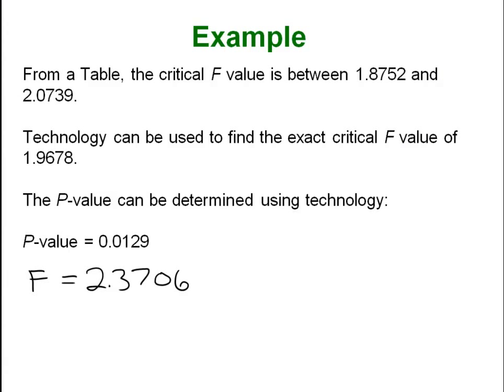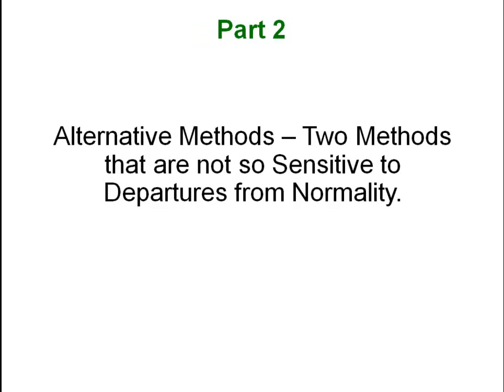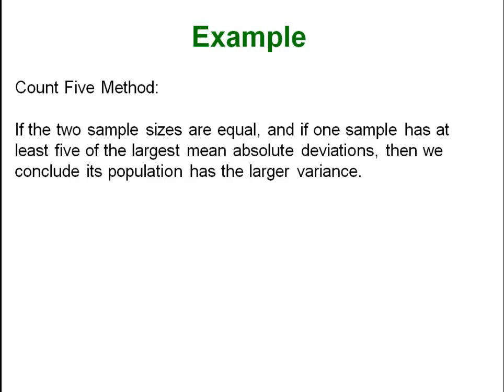We discussed at the beginning that sometimes we have to deal with data that is not normally distributed. There are two alternative methods that are not as sensitive to departures from normality. If we have populations that are not normally distributed we can use one of these two methods. They are not very robust, but sometimes it is all we can do, so just be aware that they exist.